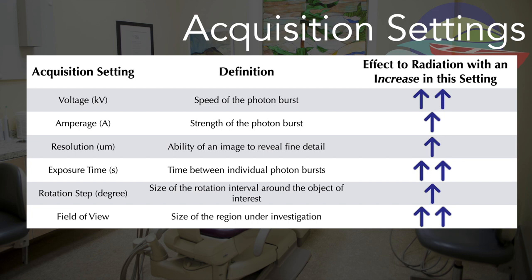The third, resolution — something we've learned a lot about already — is the ability of an image to reveal its fine detail. So the greater the number of pixels per raw 2D image, the higher the spatial resolution in the resulting 3D image. The fourth, the exposure time, is the time set between individual bursts of x-rays from the source. Increasing the exposure time improves image quality to a point, but this increases patient radiation exposure proportionately.